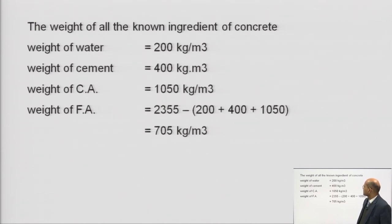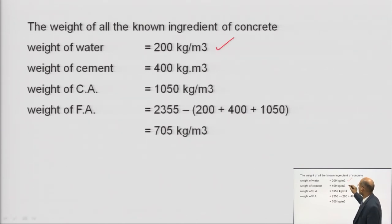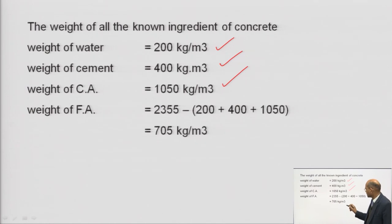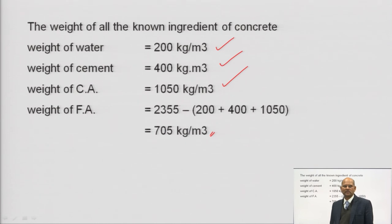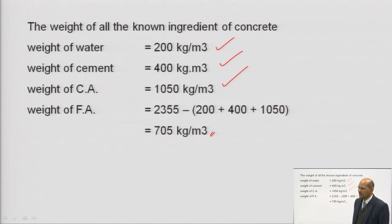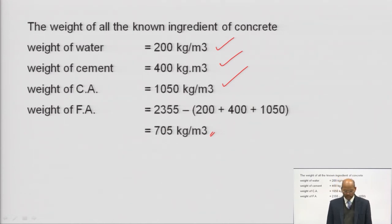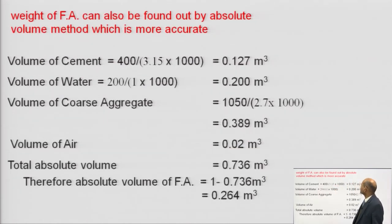So far, the weights calculated are: water = 200 kg, cement = 400 kg, coarse aggregate = 1050 kg. The weight of fine aggregate can be estimated as 2350 − (200 + 400 + 1050) = approximately 700 kg — but this is approximate since specific gravities have not been considered. For a more precise calculation, we use the absolute volume method.